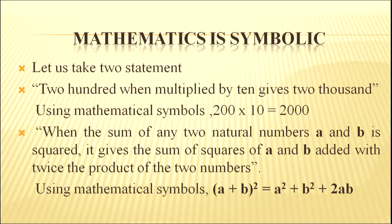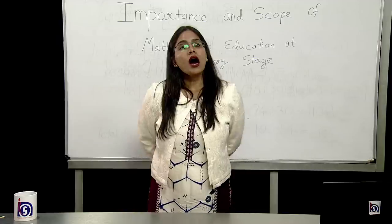Second statement is, when the sum of any two natural numbers, say A and B, is squared, it gives the sum of squares of A and B added with twice the product of the two numbers.